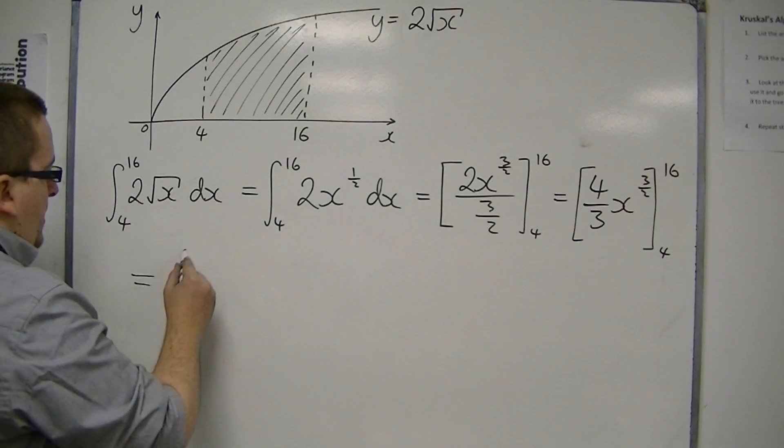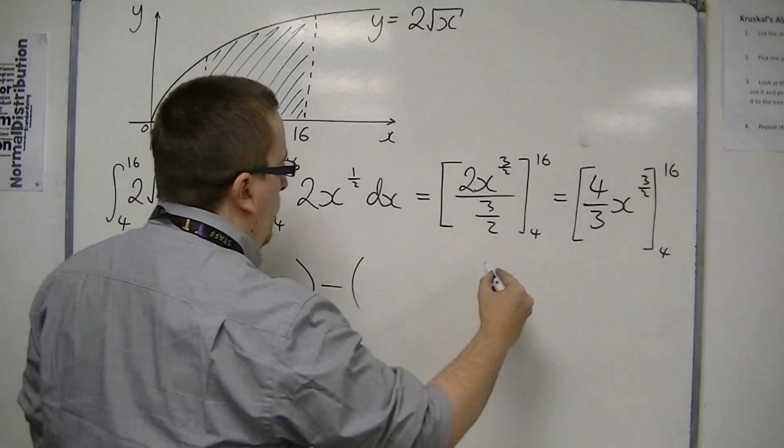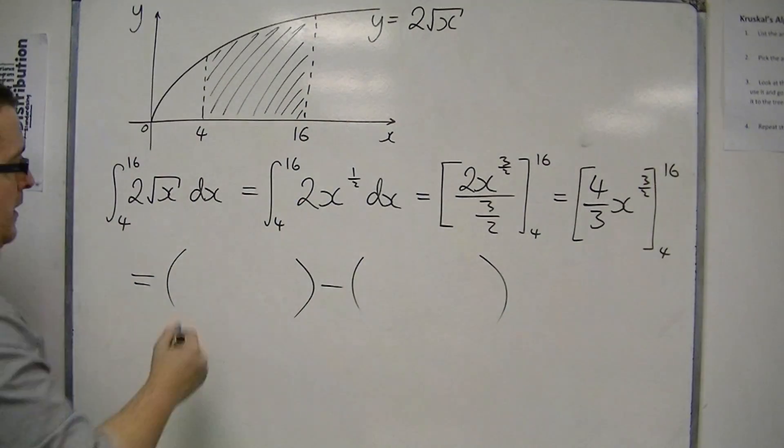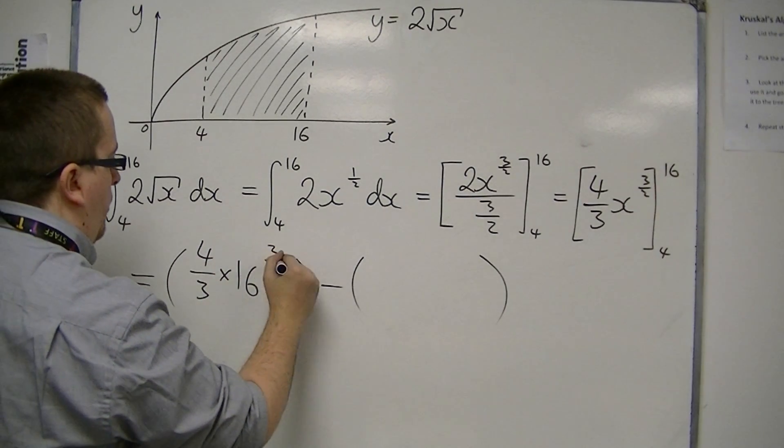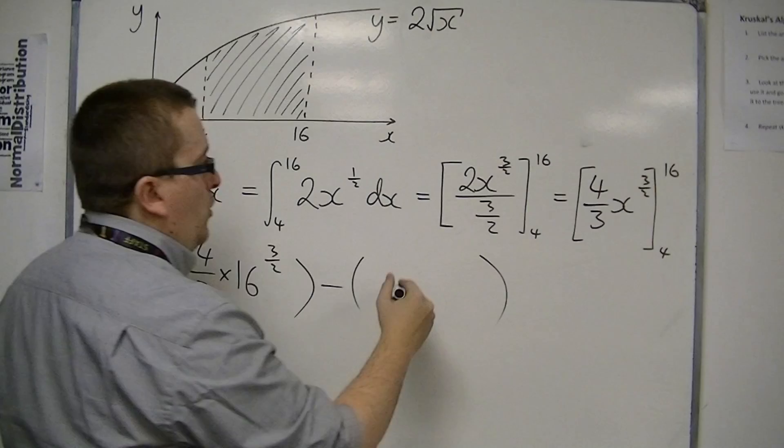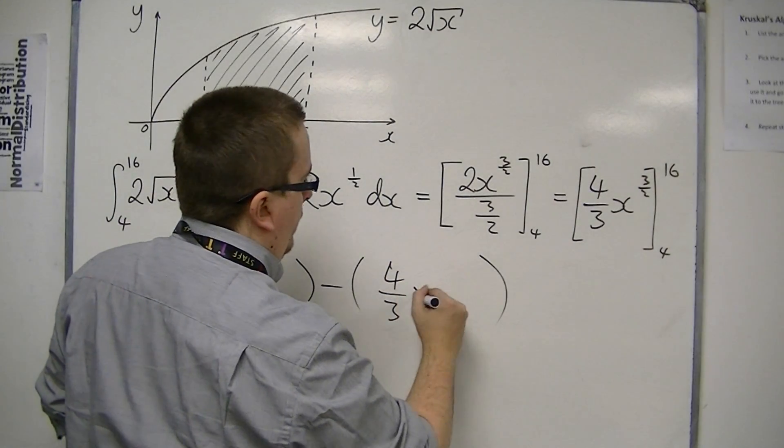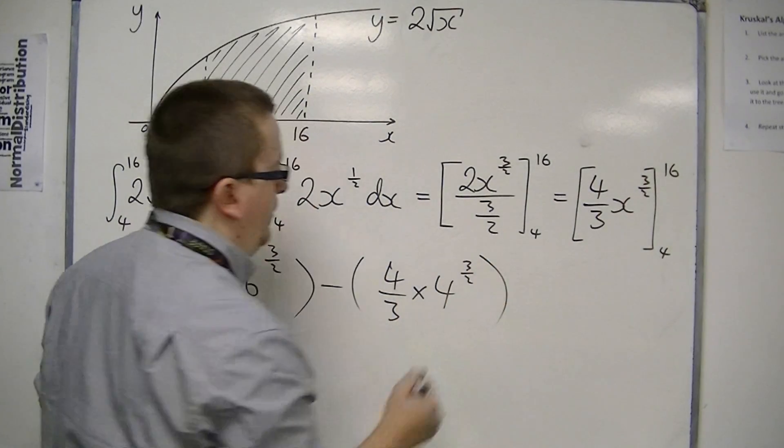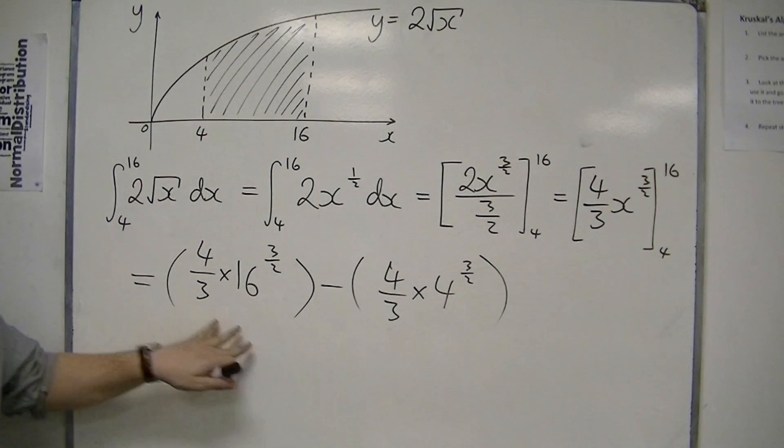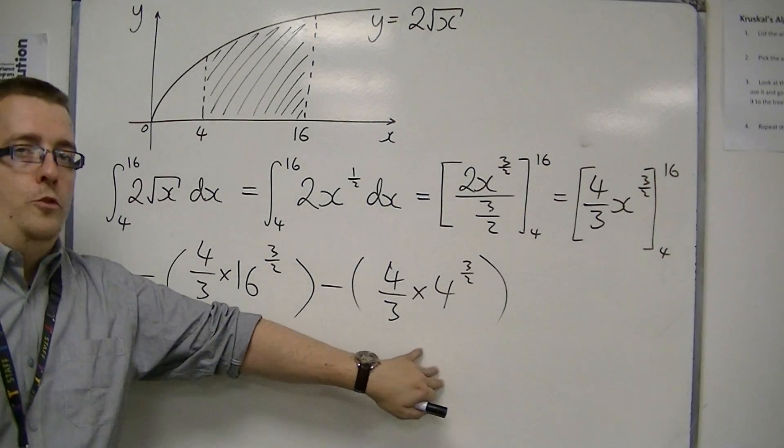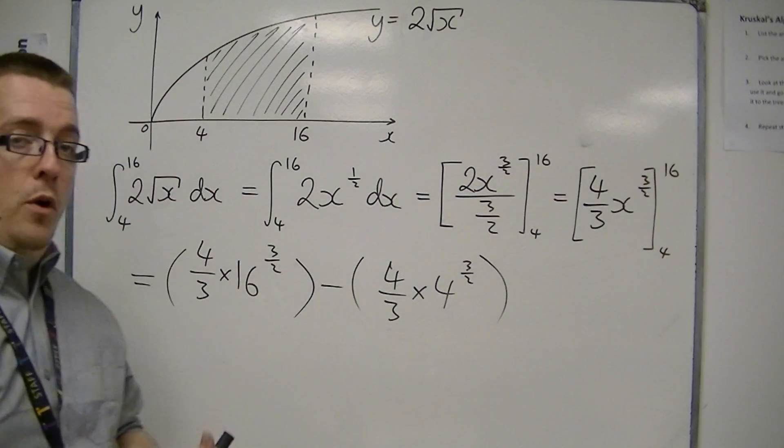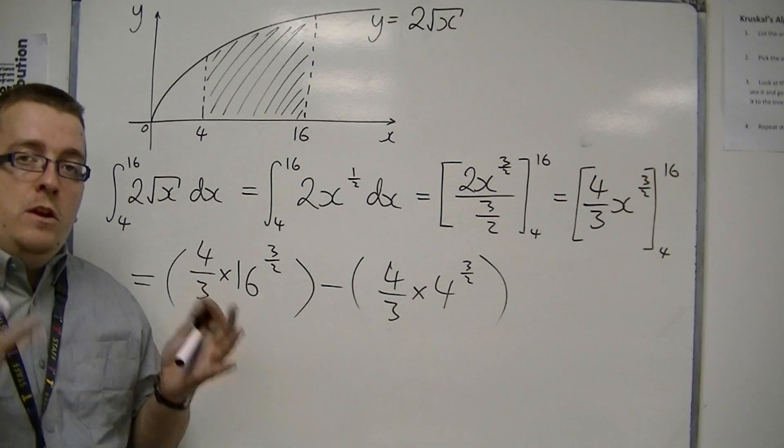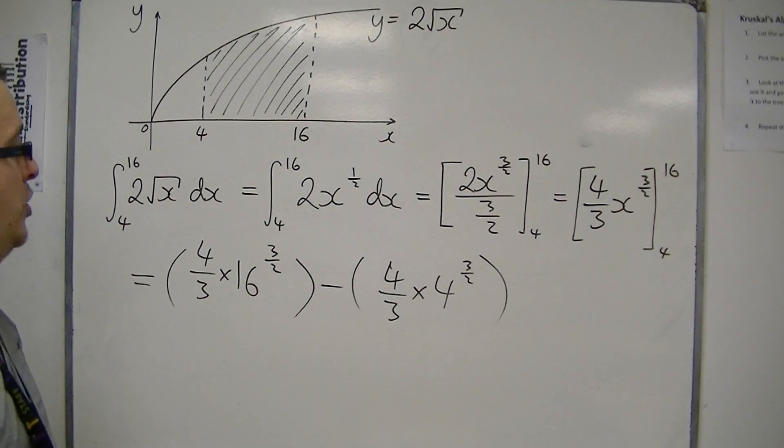I'm now going to substitute in 16 and take away substituting in 4. So I have 4 thirds times 16 to the 3 halves, take away 4 thirds times 4 to the 3 halves. You can see I still use the two bracket approach. I just write one bracket, take away another bracket, and then put in what I need. It will make your working out that much clearer.